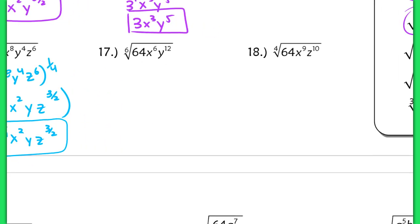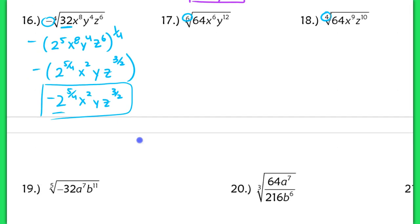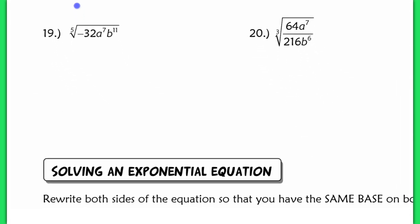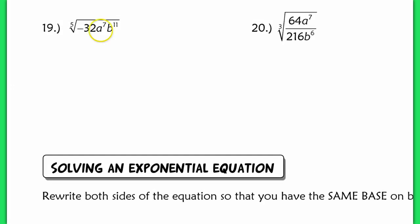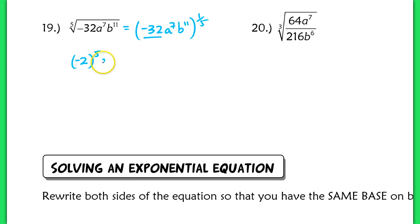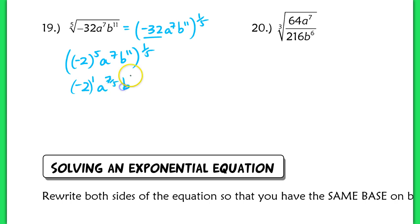Try numbers 17 and 18 on your own — pay special attention to the roots. For number 19, the negative 32 is inside the parentheses, so everything is raised to the 1 fifth power. Rewrite negative 32 as negative 2 to the 5th. So negative 2 to the 5th, A to the 7th, B to the 11th, all raised to the 1 fifth. Distributing: negative 2 to the 1st — since 5 times 1 fifth is 1 — A to the 7 fifths, B to the 11 fifths. Final answer: negative 2, A to the 7 fifths, B to the 11 fifths.